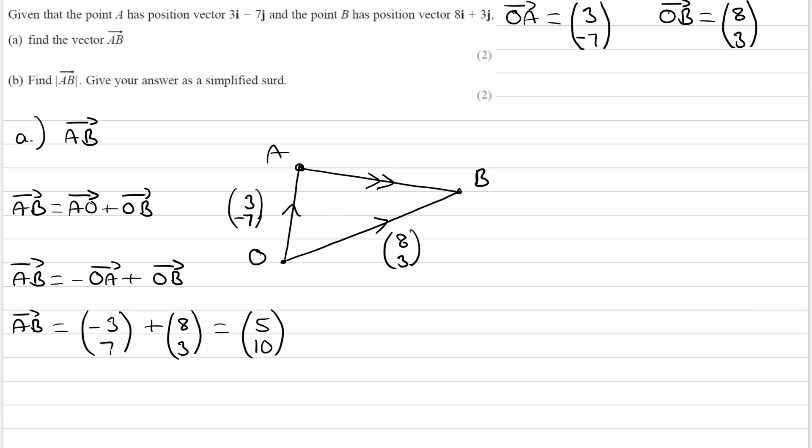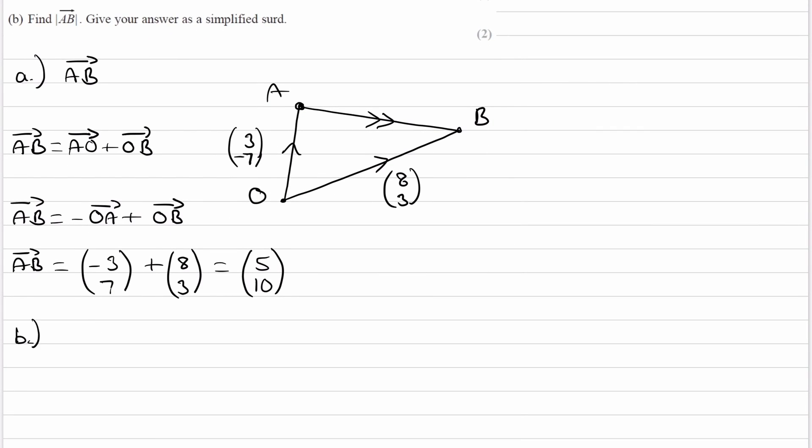So that's part A done. We found the vector AB. Now for the magnitude of AB, so that's part B. To find the magnitude of a vector, we have to use Pythagoras theorem.